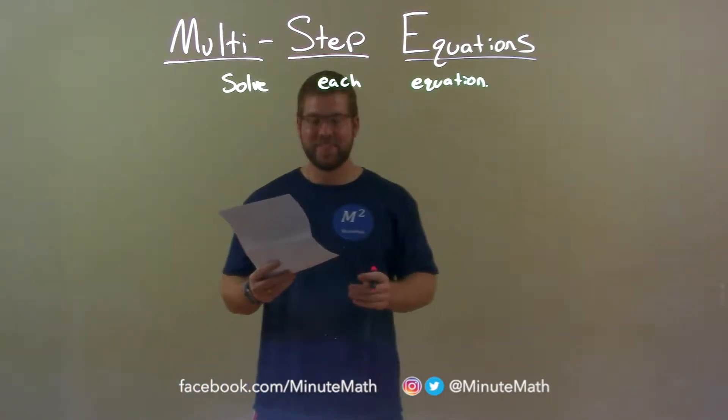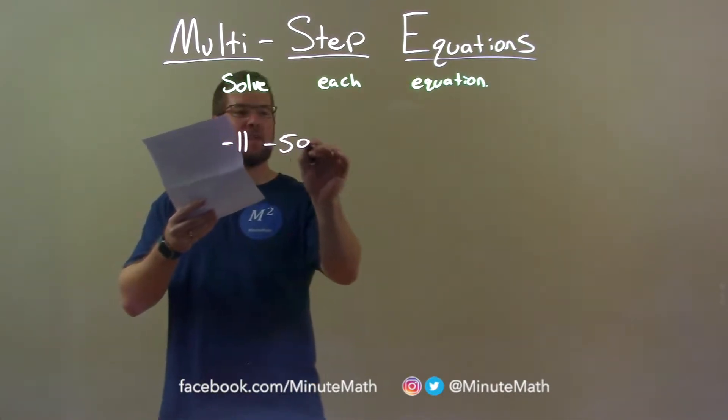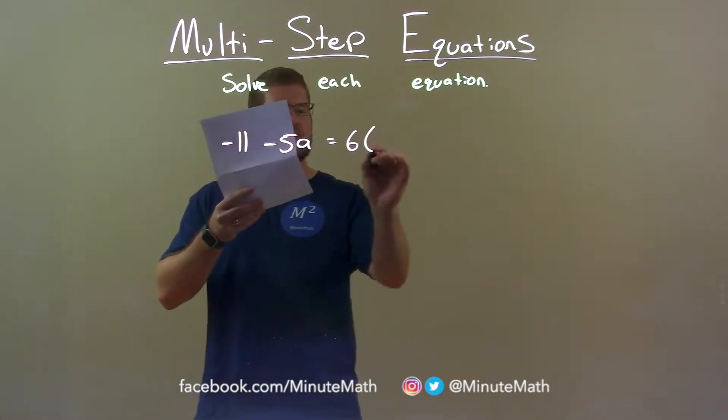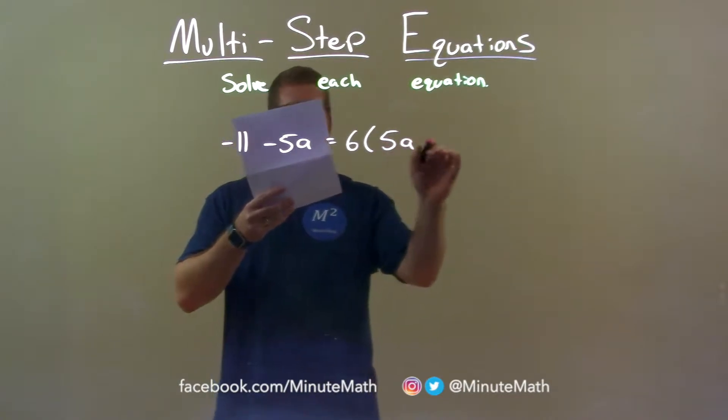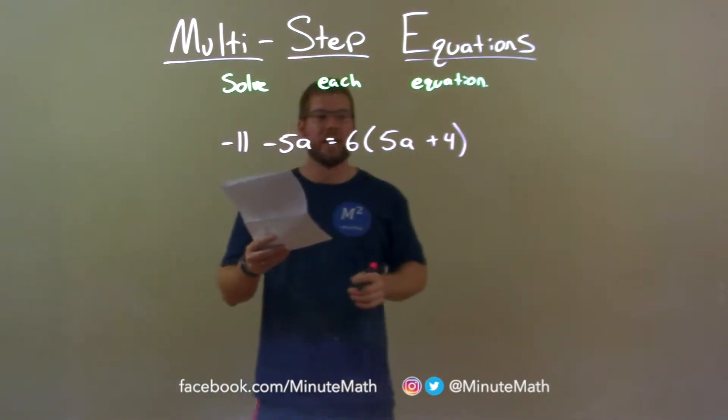If I was given this equation, negative 11 minus 5a equals 6 times 5a plus 4, I want to get a by itself.